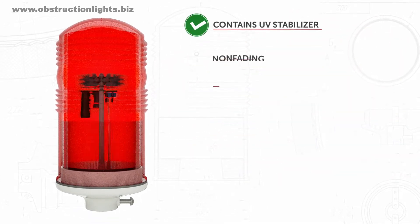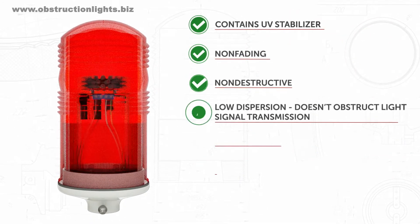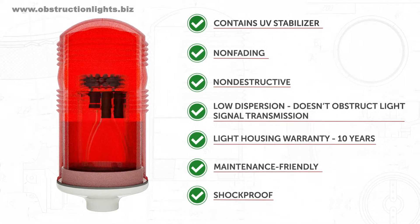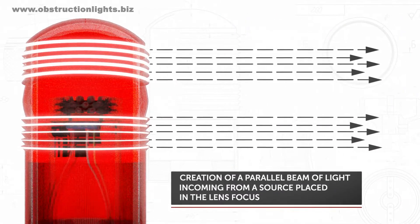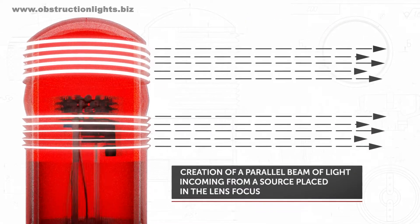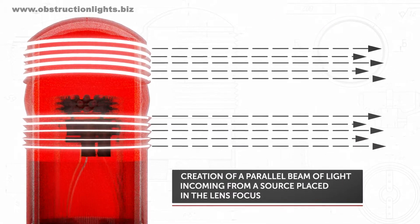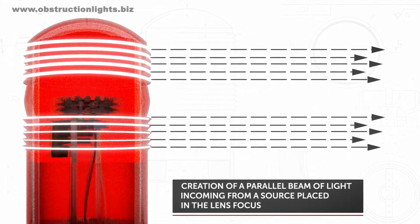ZOM48 LED light filter is made of optical shockproof polycarbonate. The external optical unit of the obstruction lights is equipped with a Zone Time Fresnel Lens.